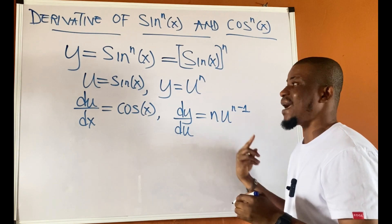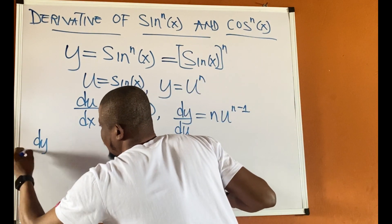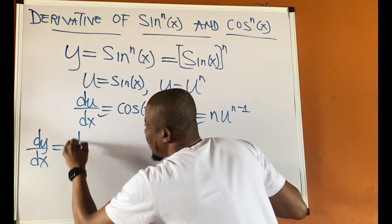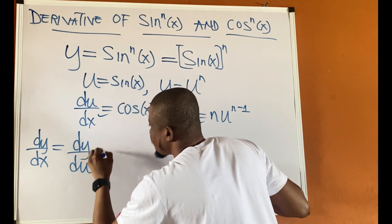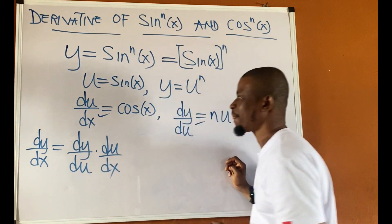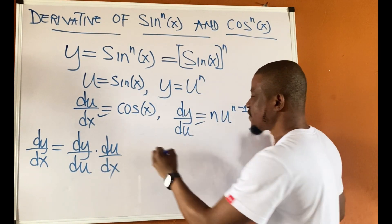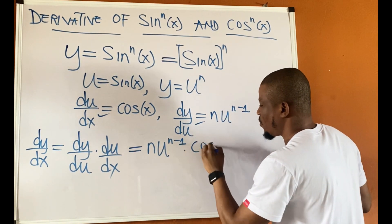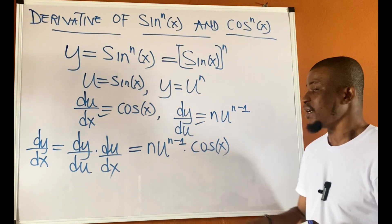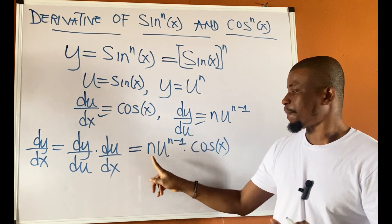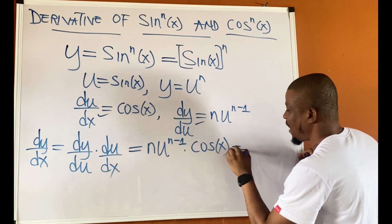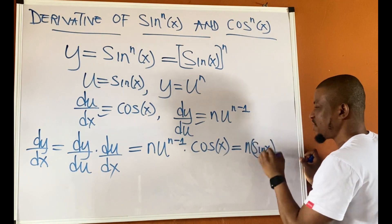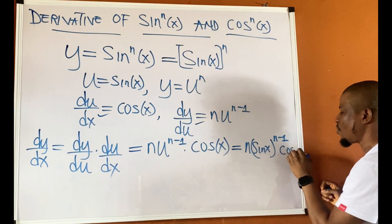The next step is to find our dy/dx, which is the multiplication of these two derivatives — dy/du times du/dx. If I multiply these two derivatives, I have n·u^(n−1) times cos x. But I need to rewrite u in terms of x. Since u is sine x, I would have n·(sin x)^(n−1) times cos x.